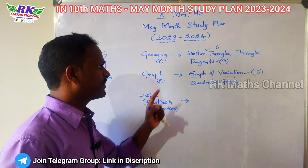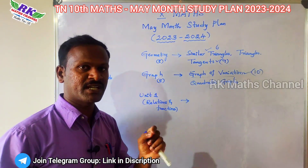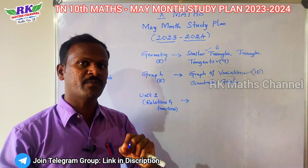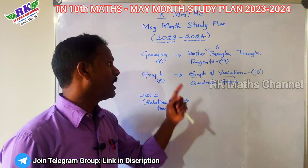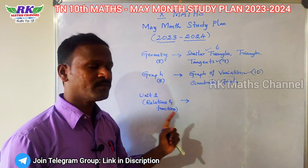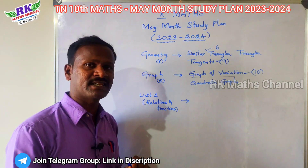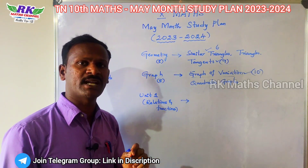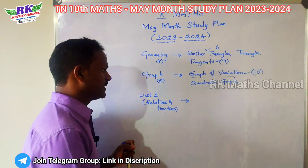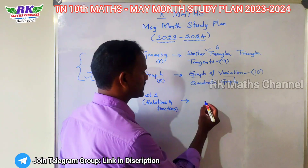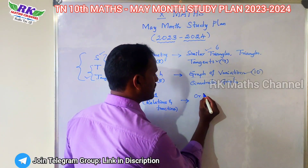Next, we will complete 16 marks — confirmed minimum 35 marks complete. So 16 marks for the first lesson.